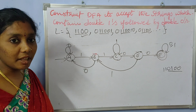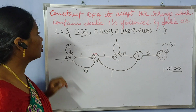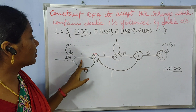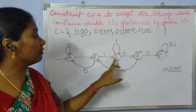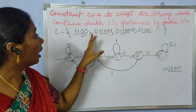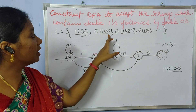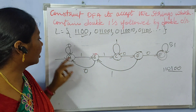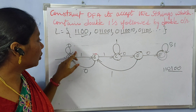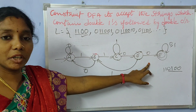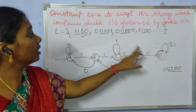Let us verify the language. The string 1, 1, 0, 0, 1, 0 — trace: 1, 1, 0, 0 — accepted. And 0, 1, 1, 0, 0, 1 — does it accept? The string 0, 1, 1, 0, 0 is also accepted.